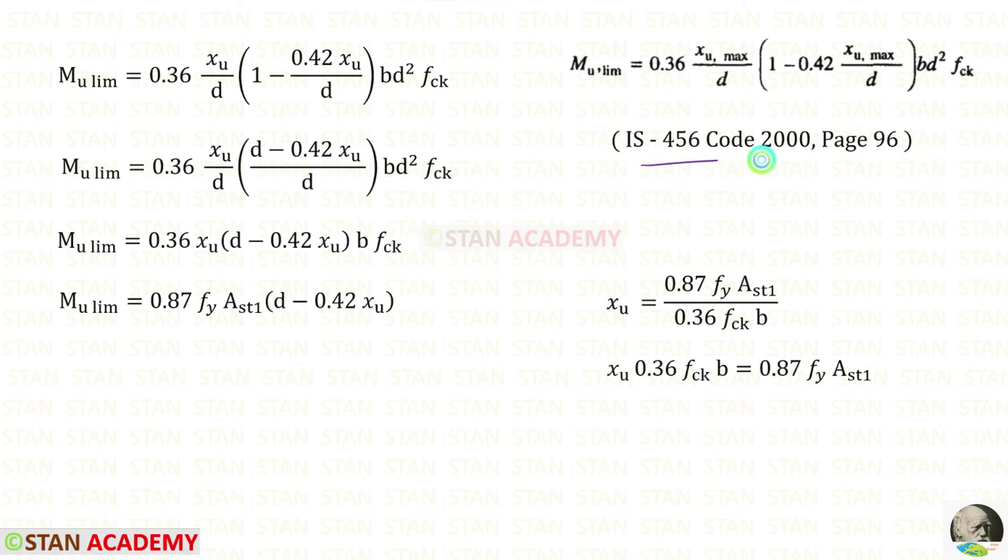From the code book page number 96, we can copy this formula. In the formula instead of XU max, we have to use XU. For these two terms we can take LCM. 1 into D, it will be D. We can eliminate this D, this D and D square. For 0.36 XU B FCK, we can apply 0.87 FY AST1. In this way for MU limit we can make this expression.